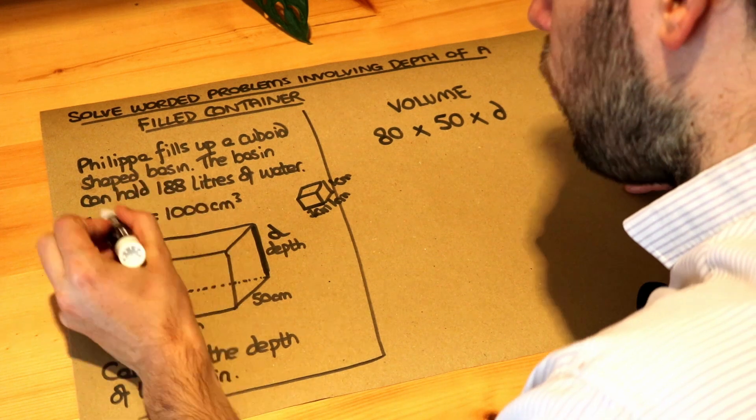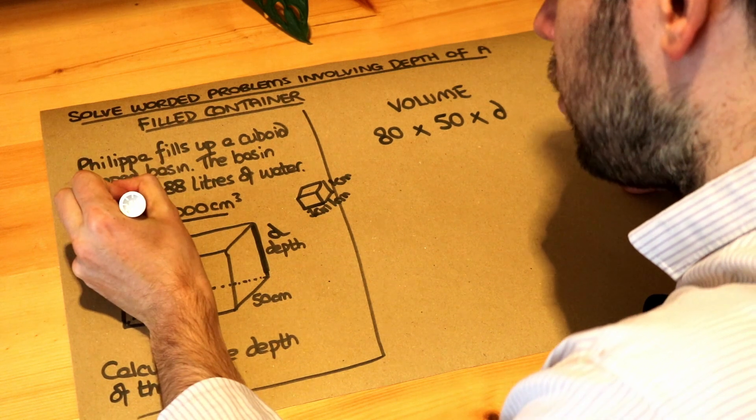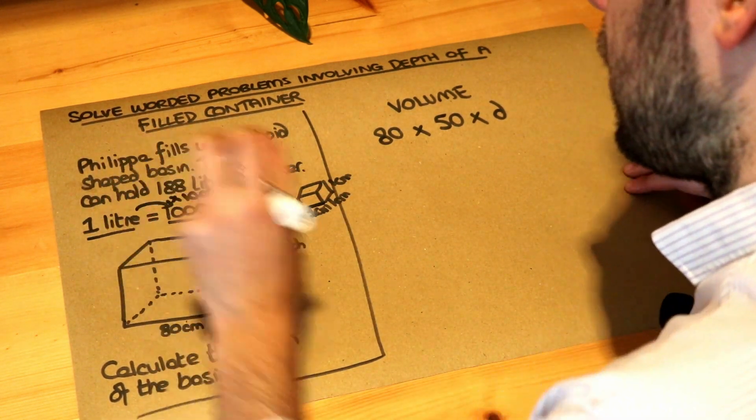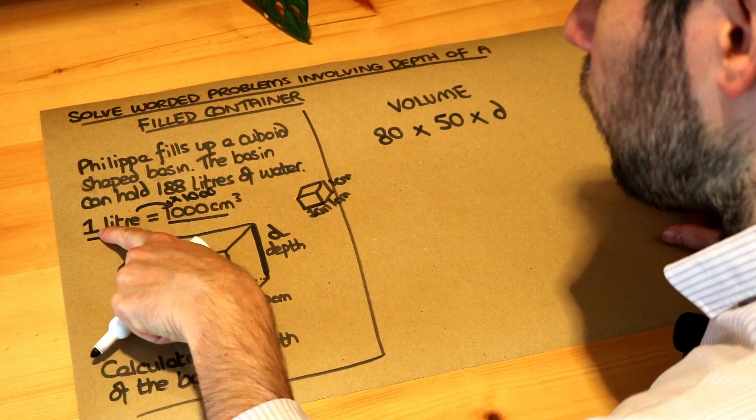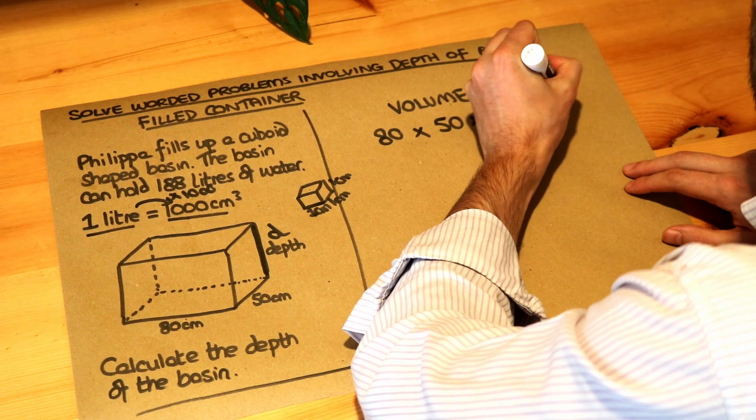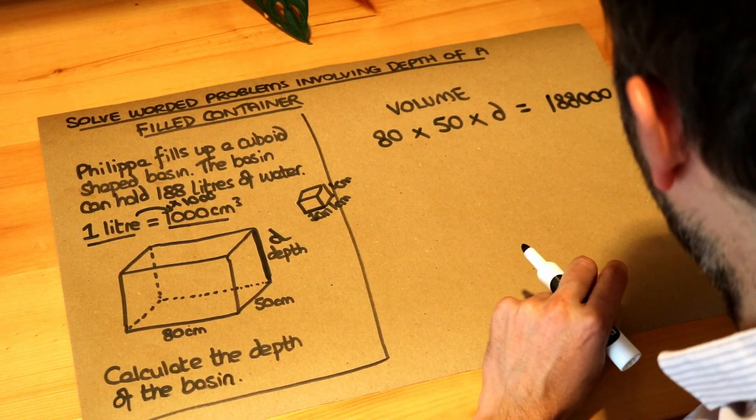Now we're told that one litre is a thousand centimetres cubed so to get from litres to centimetres cubed we're just going to times by a thousand. So we've got 188 litres we just times that by a thousand it'll be equal to 188 thousand. So there we go. We've now got an equation we can solve.